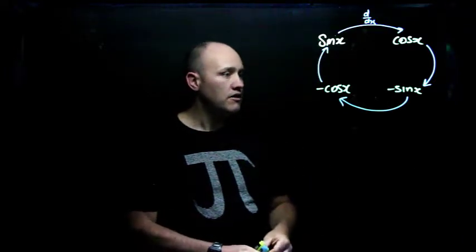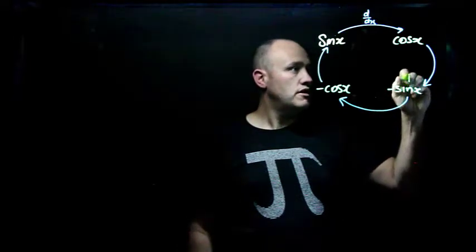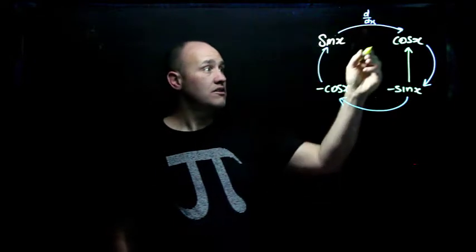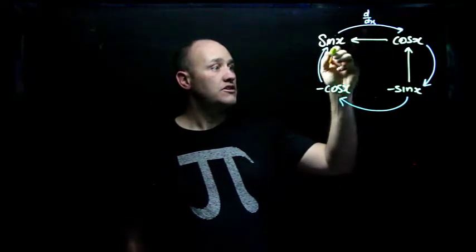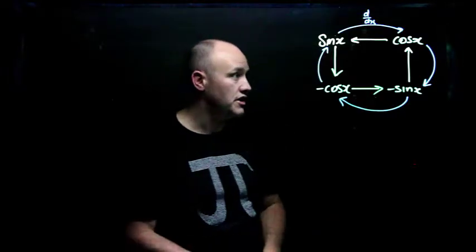Of course, if I go the other way, which I'll do here in yellow, and I might make this more like a square, I integrate negative sine x, I get cos x. If I integrate cos x, I get sine x. If I integrate sine x, I get negative cos x. If I integrate negative cos x, I get negative sine x.